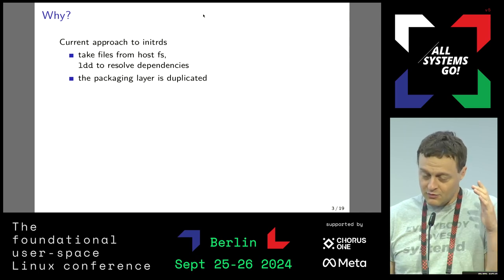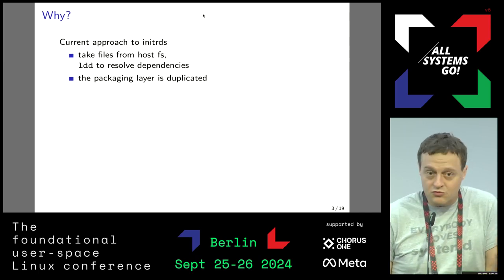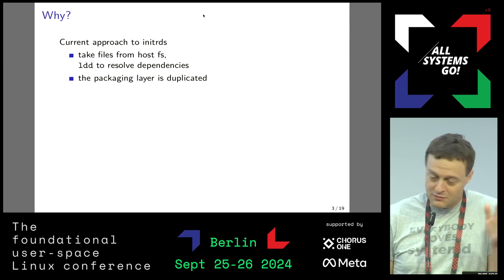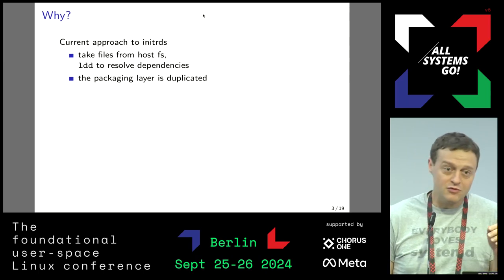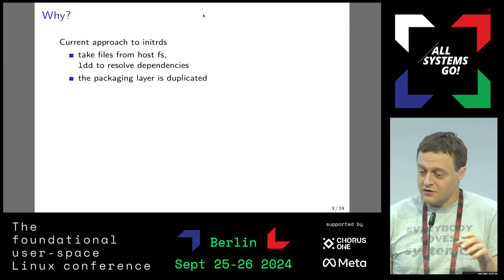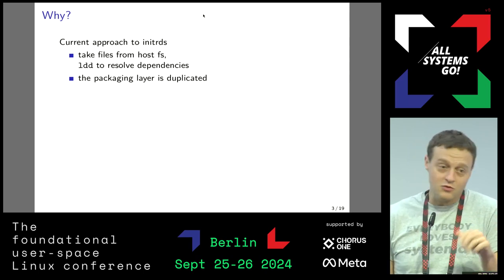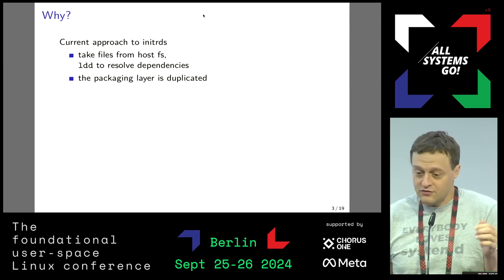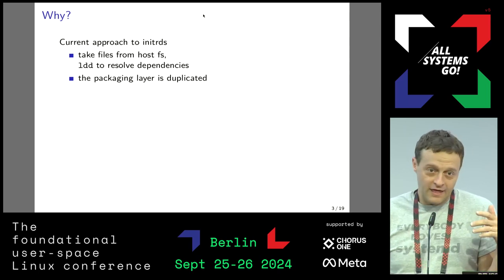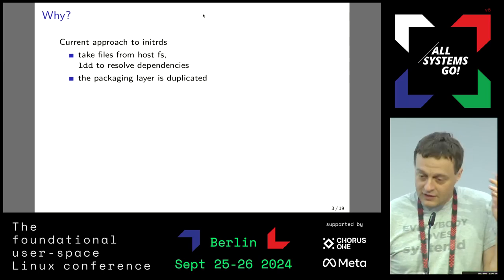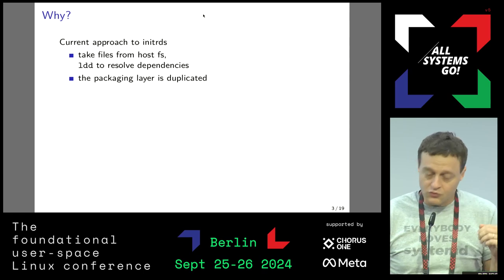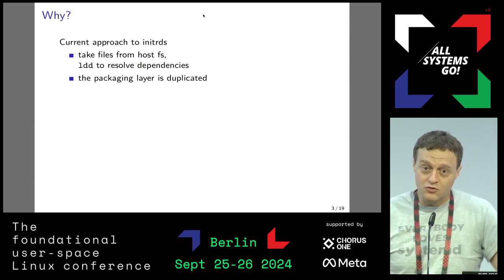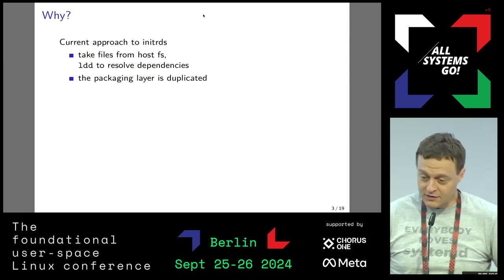In distros we already have packages, and the packages have this nice dependency syntax between them - requirements, recommends, conflicts, post-installation scripts. And with something like Dracut, which is used in Fedora, we kind of kick all that to the curb and repeat the whole thing badly.